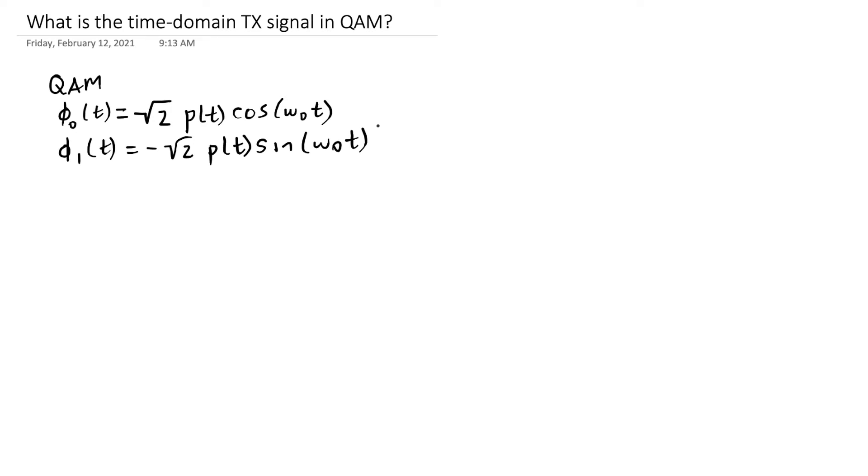So what I'm going to do is first I'm going to talk about how in QAM we have the following two basis functions. In QAM we're going to have a list of symbols. These symbols are going to be S0, S1, S2, all the way up to S M minus 1.